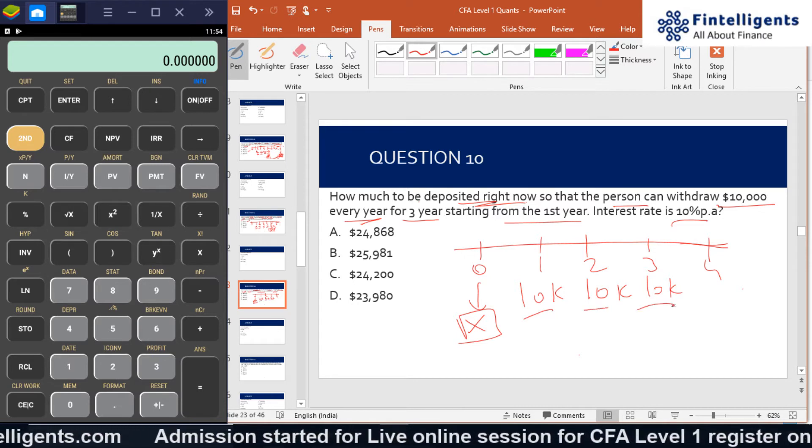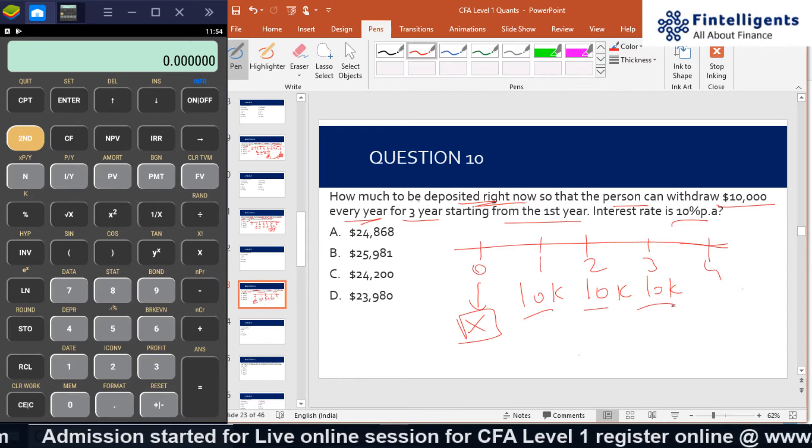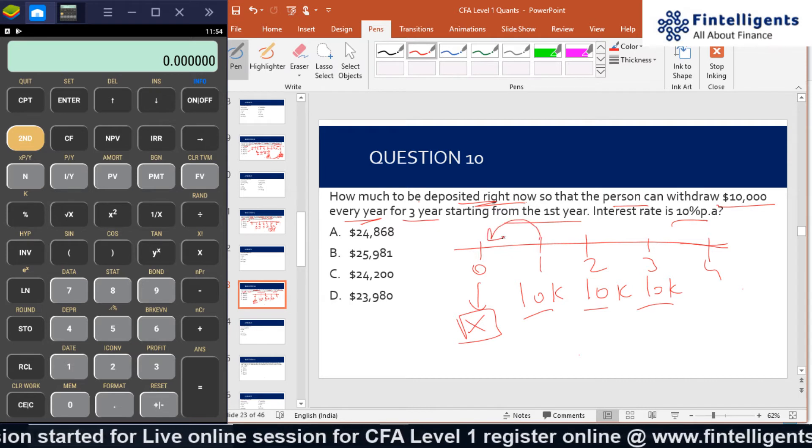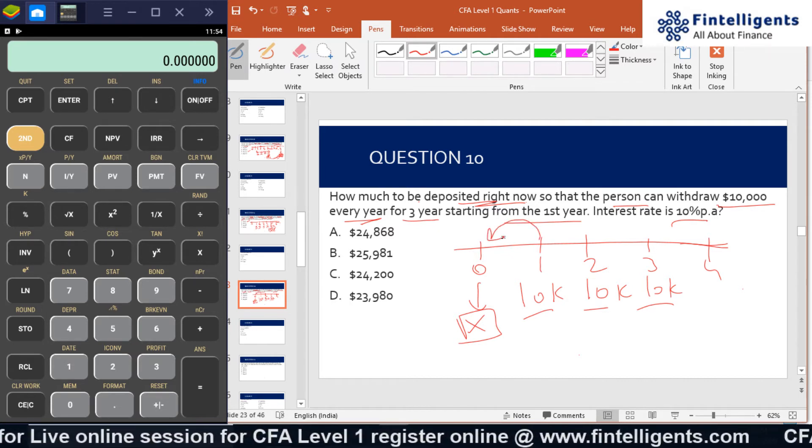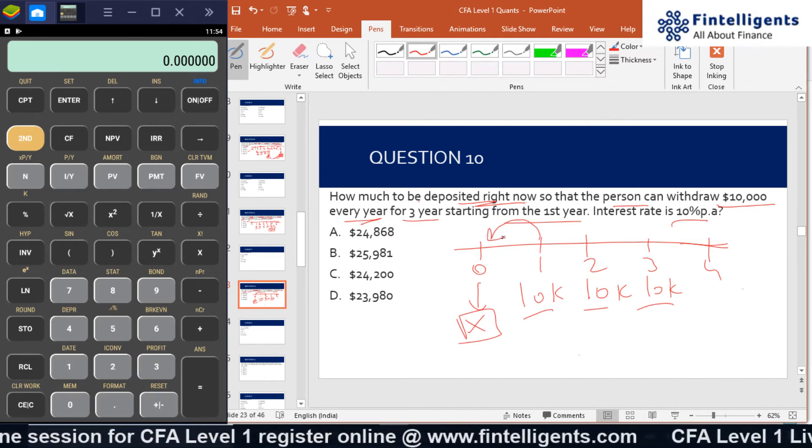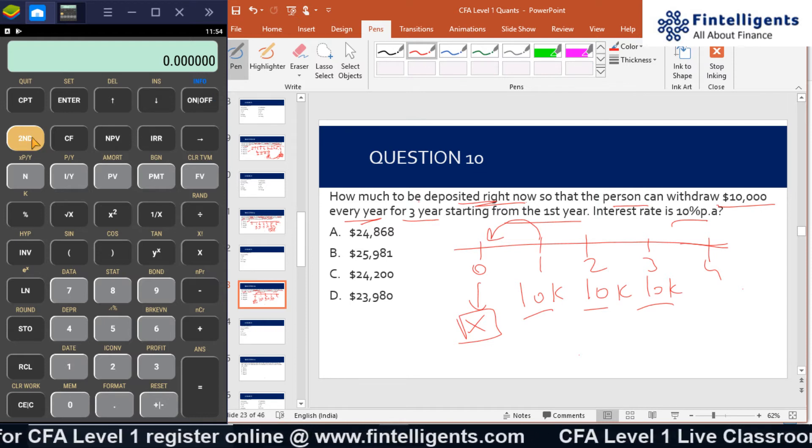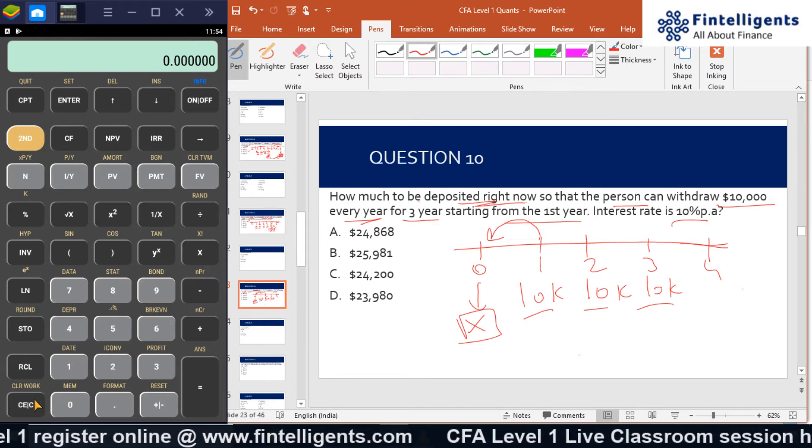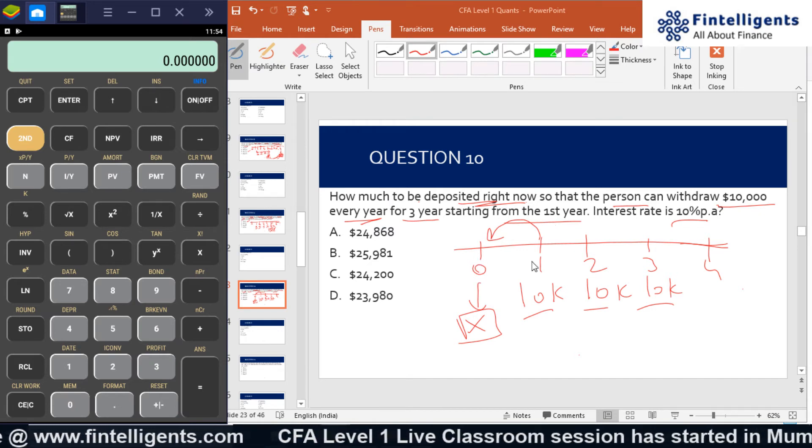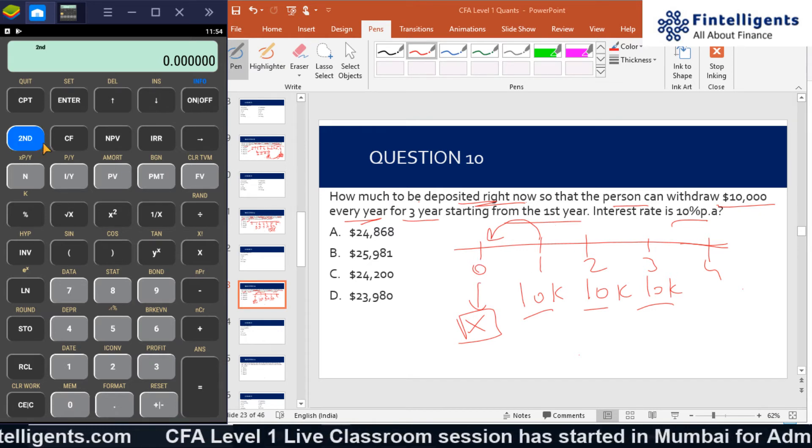That means when I find the present value of PMT directly in the calculator, it will give me the value at time 0, as per this question. So I'll start the calculation. Second FV is the first step.